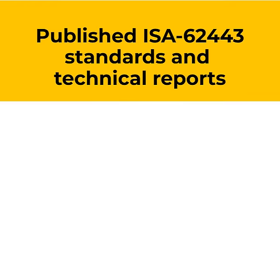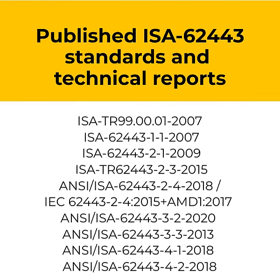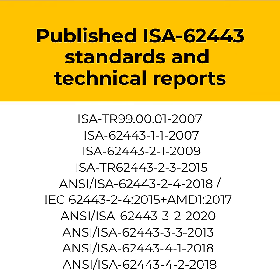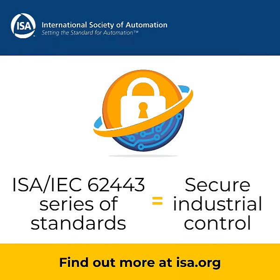Final documents are available from both IEC and ISA. They have corresponding naming conventions from both organizations, but are identical and released concurrently. The ISA/IEC 62443 series of standards are among the essential building blocks of a secure industrial control system. Visit ISA.org to discover even more cybersecurity resources.